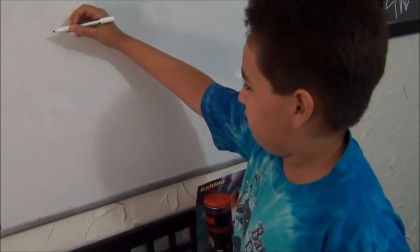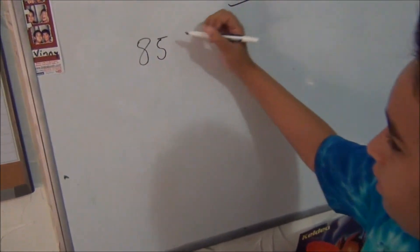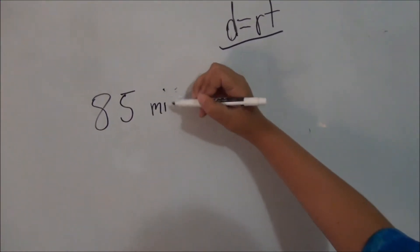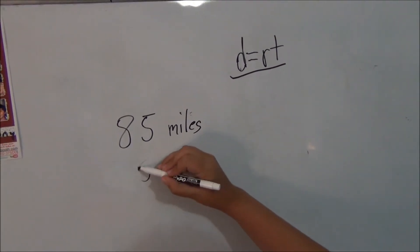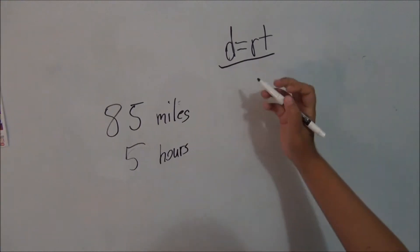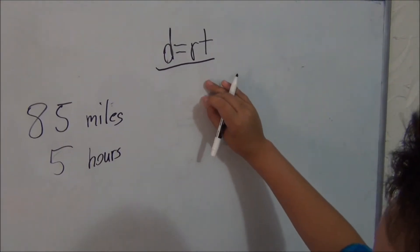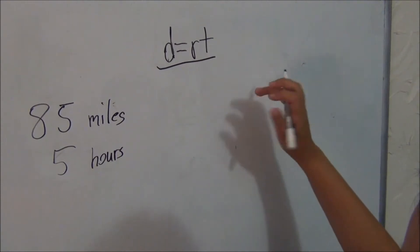So, let's just give a sample problem here. A train travels 85 miles in 5 hours. So, we can put a variable equation, meaning there is one variable and then a different amount of numbers.